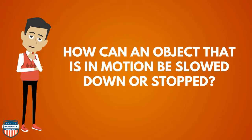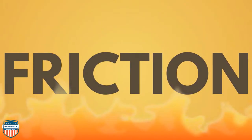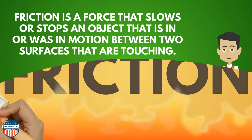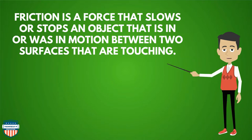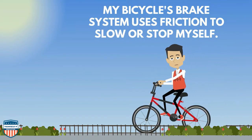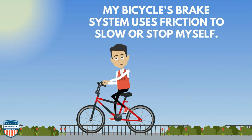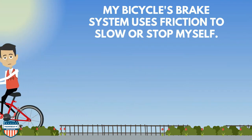How can an object that is in motion be slowed down or stopped? I give you friction. Friction is a force that slows or stops an object that is in or was in motion between two surfaces that are touching. My bicycle's brake system uses friction to slow or stop myself.